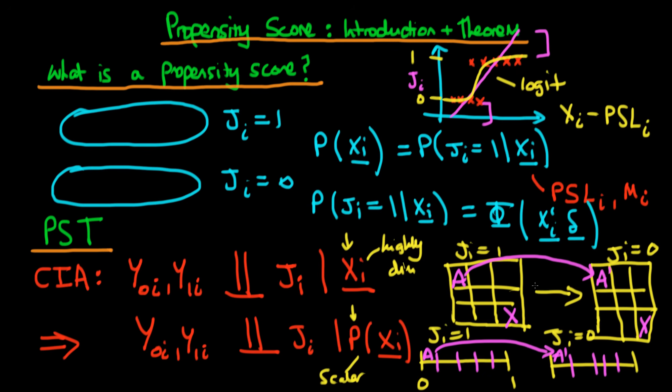The example I've given here is known as propensity score matching — we've matched strata across the treated and untreated group in terms of the propensity score. There are other important ways to use propensity scores which I'll talk about in later videos. The propensity score is a very neat and tidy way of allowing us to come up with estimates of the average causal effect and avoid the issue of highly dimensional covariates.